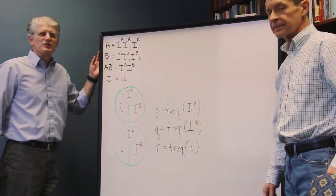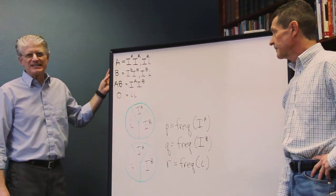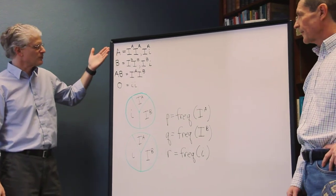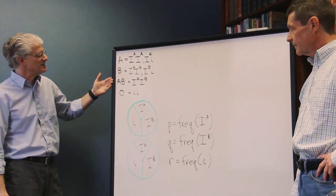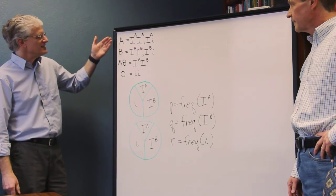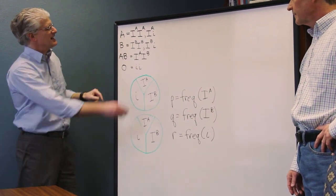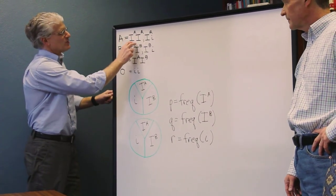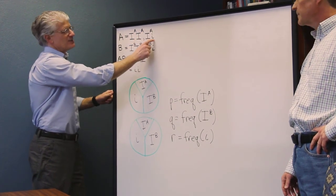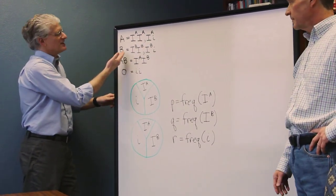Well, the ABO blood group is a wonderful three allele system. There are four blood types. The A type, the B type, the AB type, and the O type. The A type can consist of a genotype where both alleles are the IA, or one allele is the dominant IA and the recessive little i.